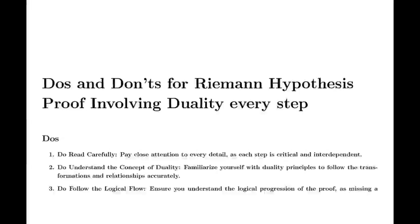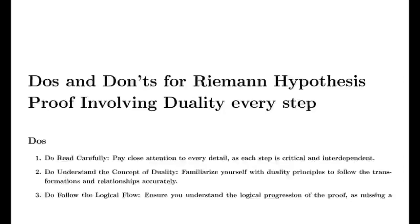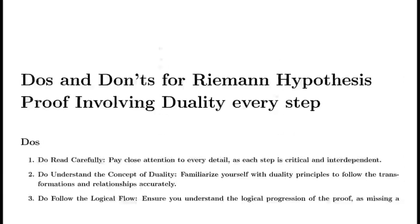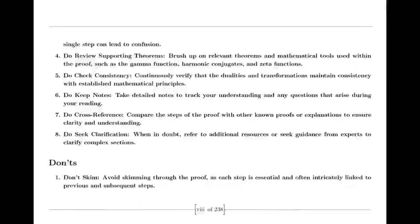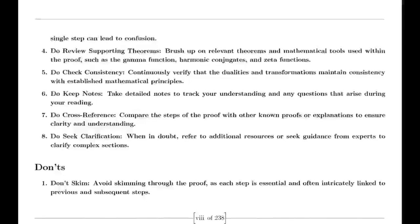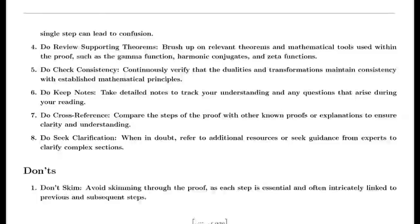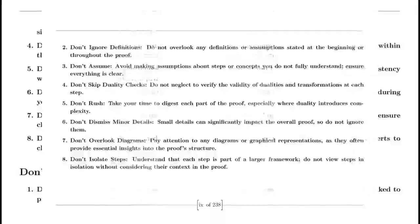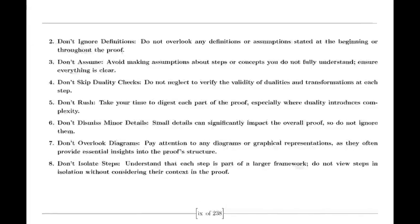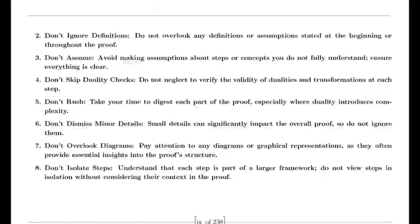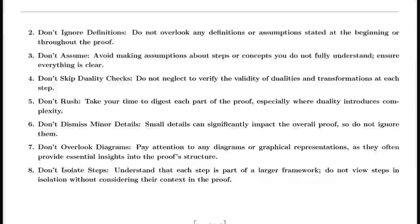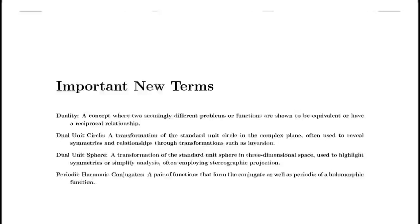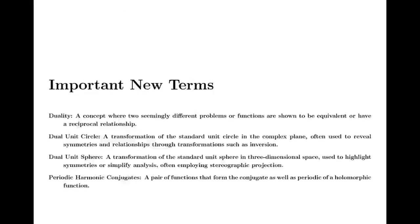Euler didn't stop there. He also tackled the Basel problem, concerned with finding the exact sum of the reciprocals of the squares of the integers. By examining the sine function in its product representation, Euler derived a formula showing that the sum of these reciprocals equals π²/6. This result was a significant achievement in mathematics and highlighted Euler's ability to uncover connections between different mathematical concepts.